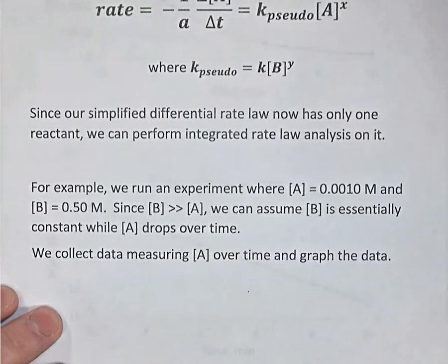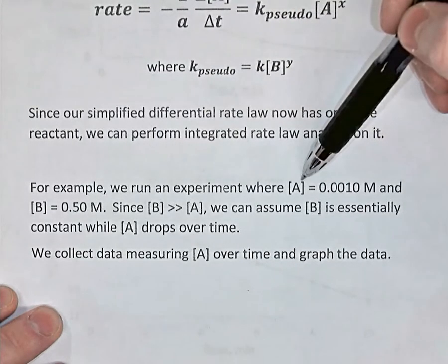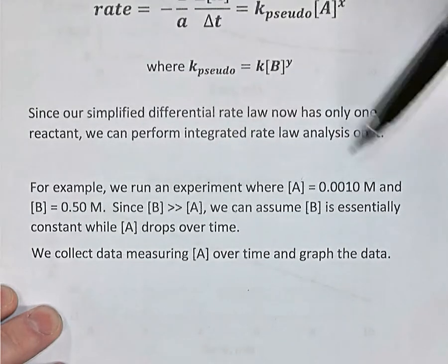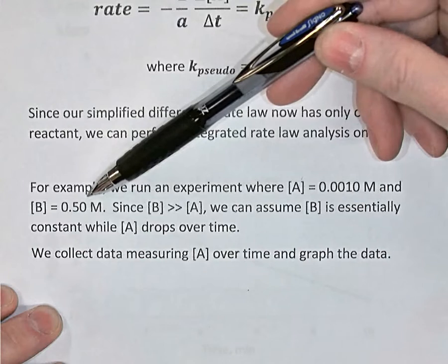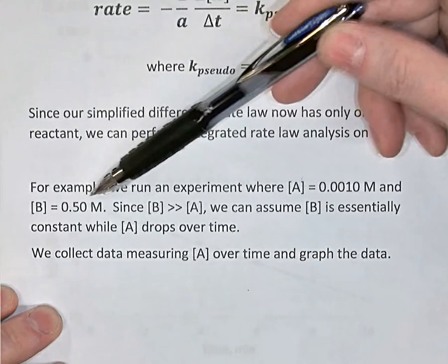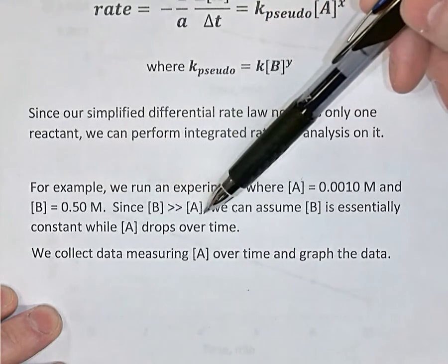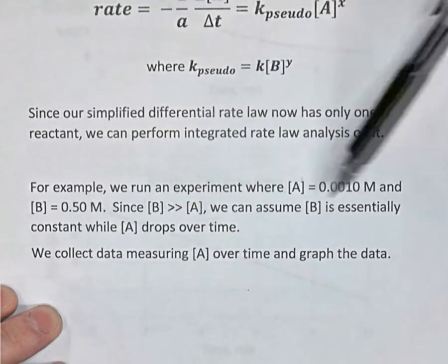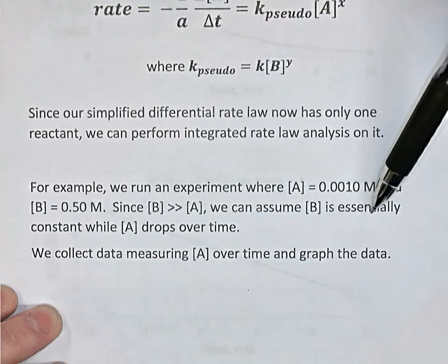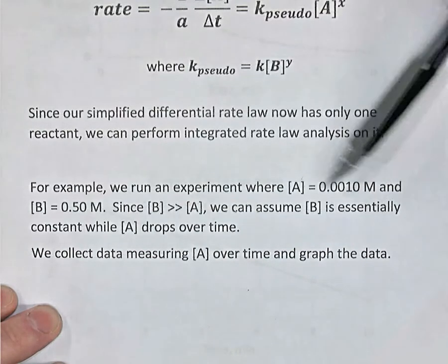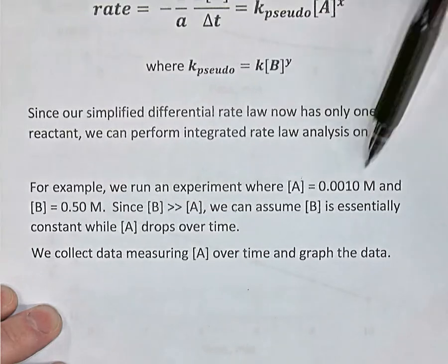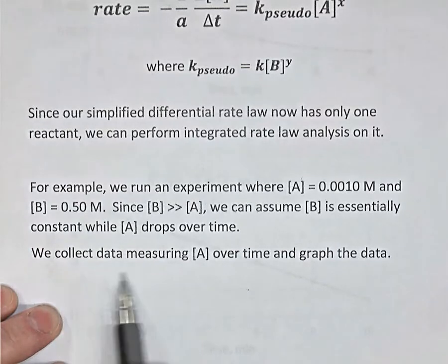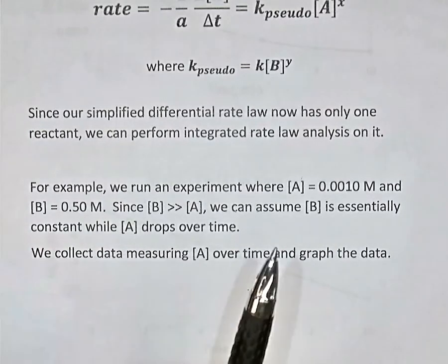As an example, we'll use a reaction where the concentration of A is very low — 0.0010 molar — and the concentration of B is much greater, 0.5 molar. We have flooded the system with B, so B's concentration will remain essentially constant during the reaction while A drops to an even lower level. Now we can measure the concentration of A over time.